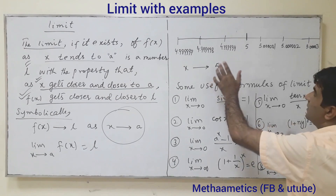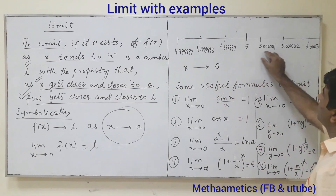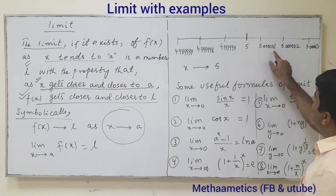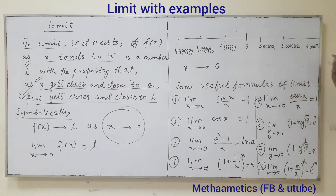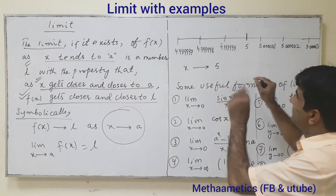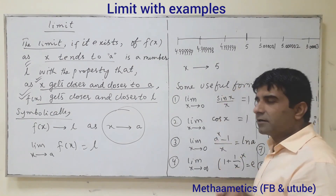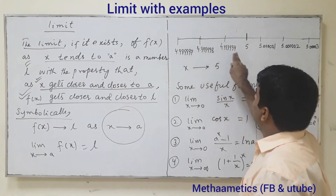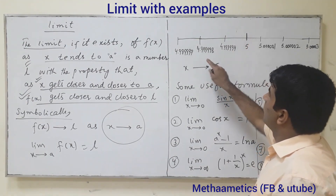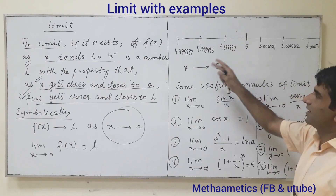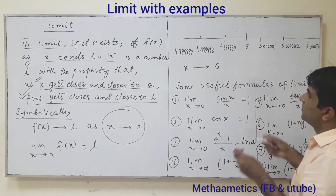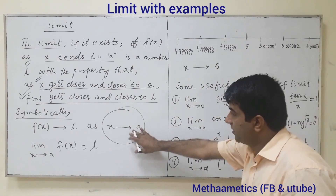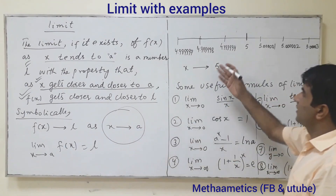The value of x is not exactly 5. Its value may be very near to 5 — it may be 5.0001, 5.002, 5.003, with small small changes, or 4.99999, 4.9998, 4.99997. In this way, the value of x approaches 5.